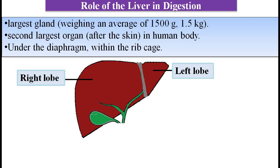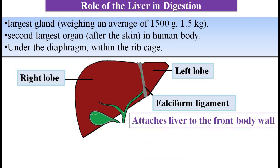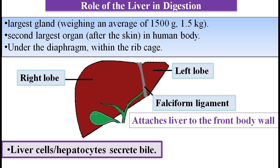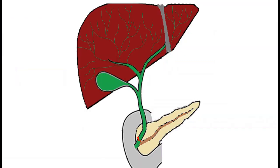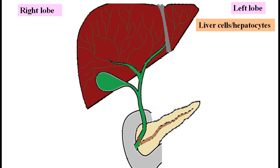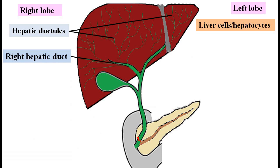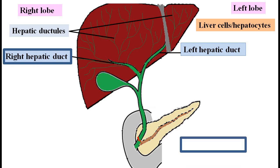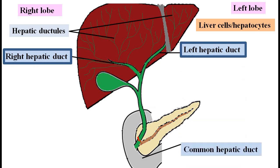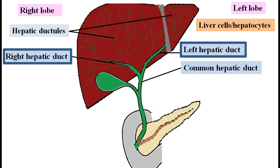Between the two lobes lies the falciform ligament. The falciform ligament attaches the liver to the front body wall. Liver cells are called hepatocytes, which secrete bile. When hepatocytes secrete bile, it is collected by hepatic ductules that eventually join together to form the right hepatic duct and the left hepatic duct. The right and left hepatic ducts join together to form the common hepatic duct.